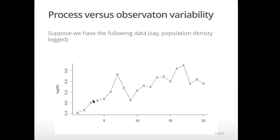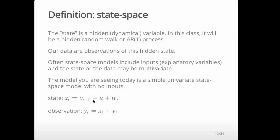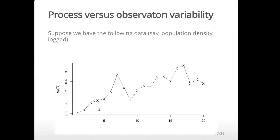Within these state space models, some more jargon you'll need to familiarize yourself with: there's something called process error and non-process error. The process error is that time-step-to-time-step variability in the hidden state. The observation error is the error between our observation and that hidden state. If I think about the hidden state as a straight line — that would be a linear regression — then there's no process error because it's just a straight line. All the error in the data would be non-process error.